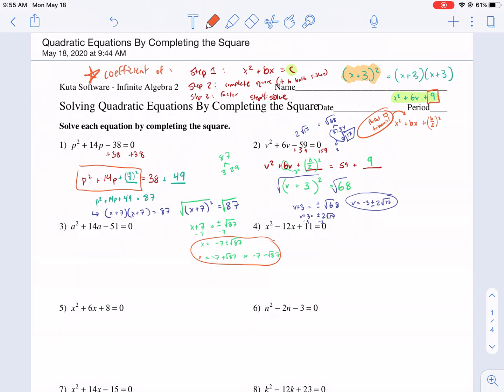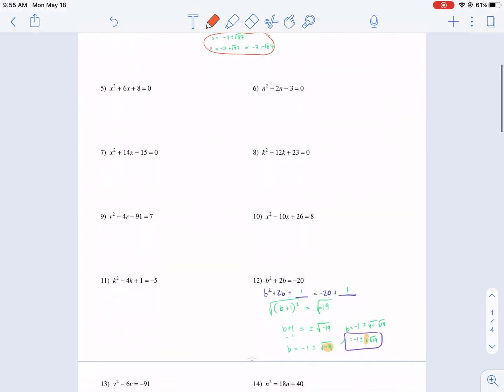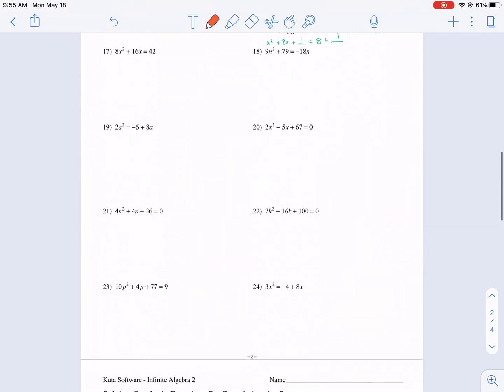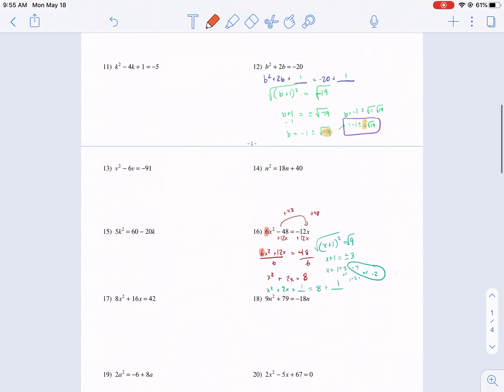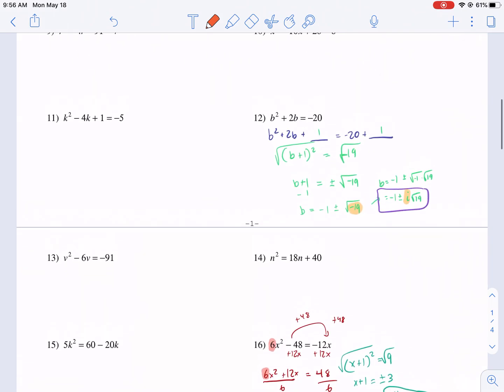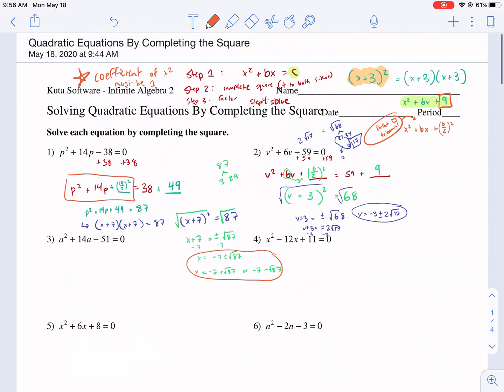Coefficient of x squared must be 1 for completing the square. Okay? Hopefully this gives you a little bit more information and a little bit more strategy in how to approach these problems. If you have any questions, please leave a comment below. And I hope to see you next time on West Explains Best. Take care.